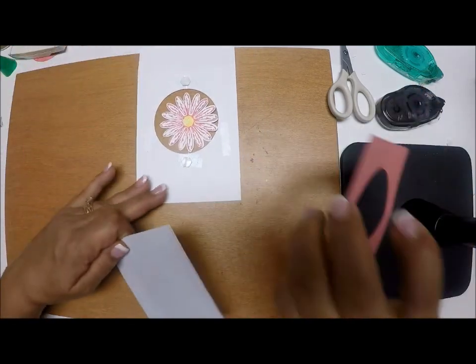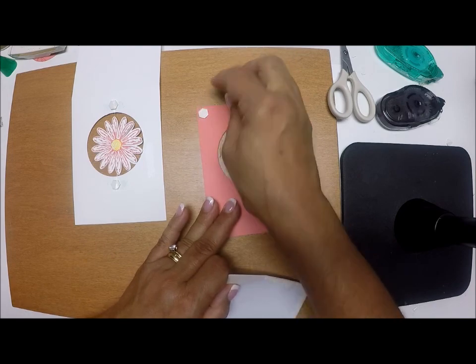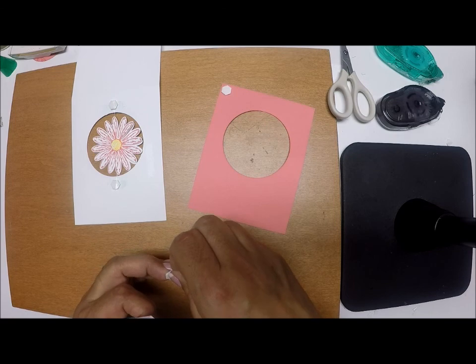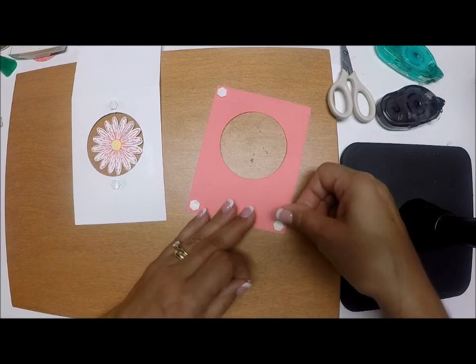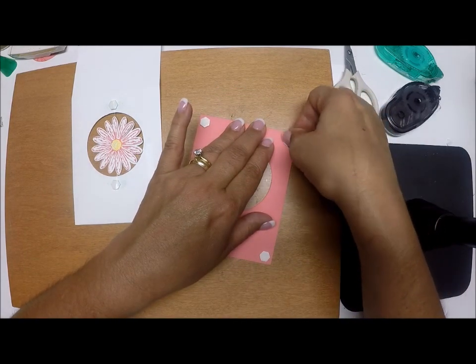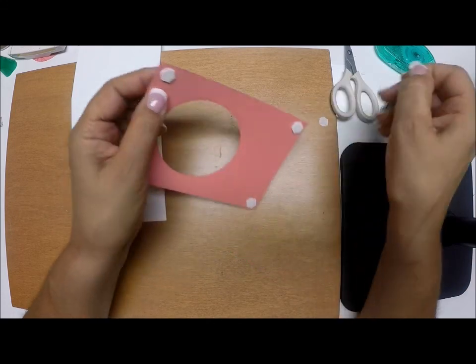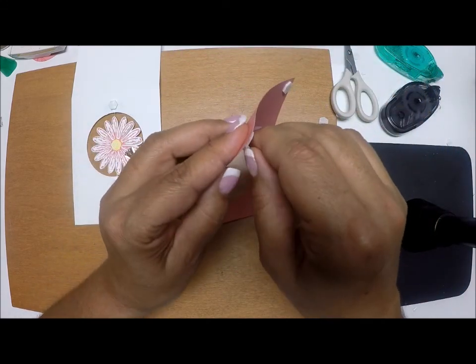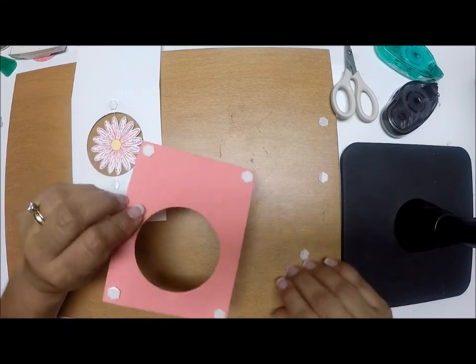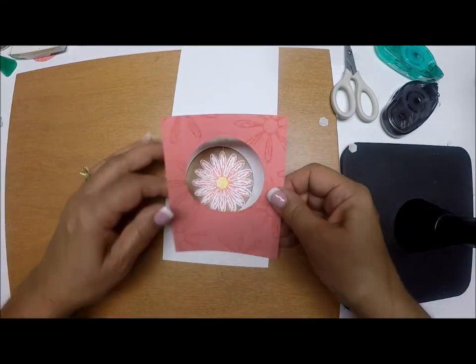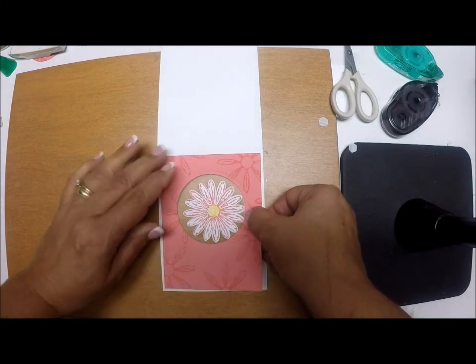Take the tops off. Then we're going to put some Dimensionals on the back of our Flirty Flamingo. And I love that these Dimensionals have little straight edges on them, so you can line them up. Then we'll remove these as well. I'm going to center this right here. Make sure our circles line up and press.